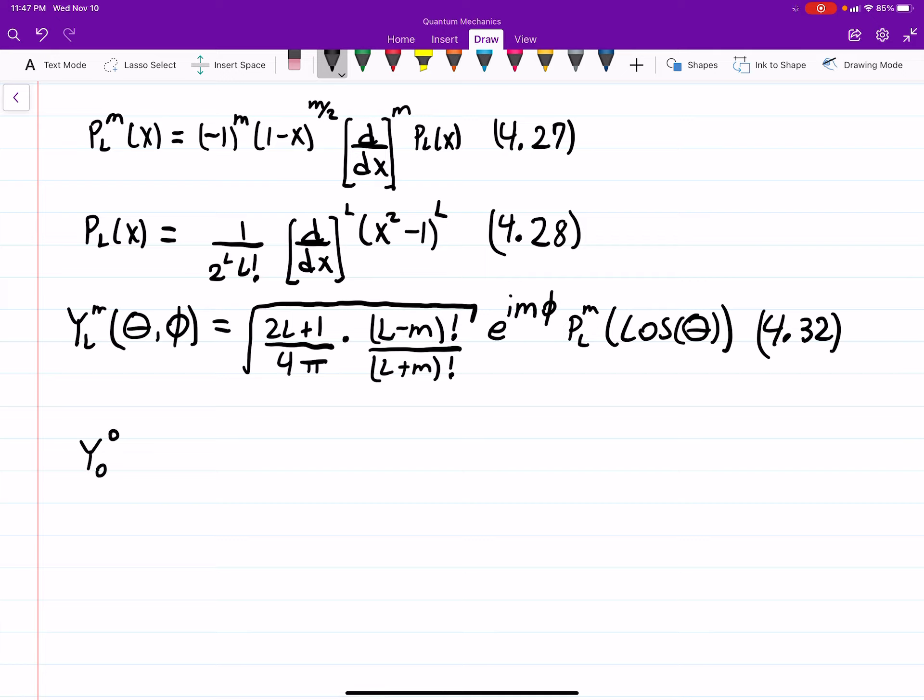So our quantum numbers L and M are just 0. If we plug this in, you'll just get 1 over the square root of 4π, times 0 factorial over 0 factorial is just 1, e to the 0 is just 1, times P₀¹ of cosine theta.